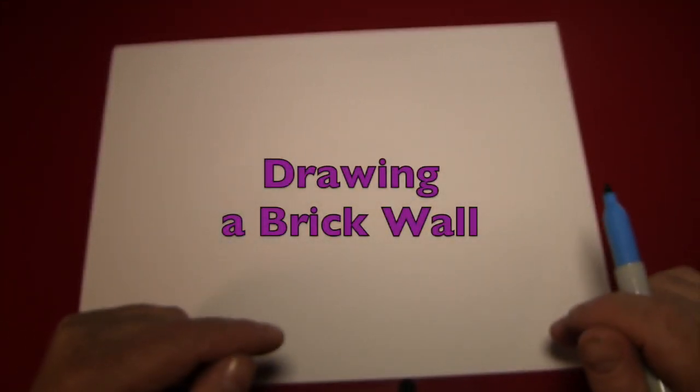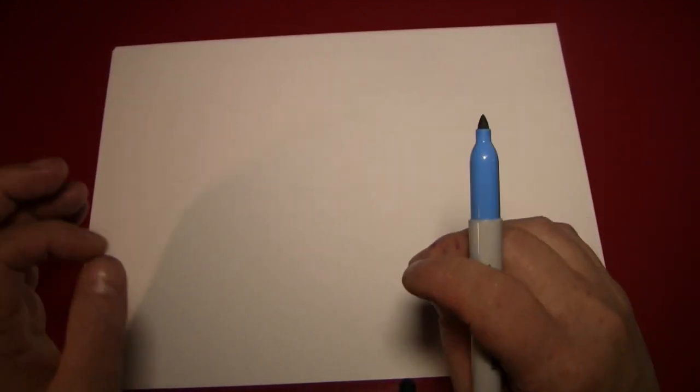Now, a brick wall may sound like a simple object, but it's actually a smaller part of other larger objects you might want to draw. For instance, you might want to draw a castle or a schoolhouse, or maybe you'd like to draw a really large brick wall. Well, to do that, you're going to have to be able to draw a brick wall, which we're going to do right now.